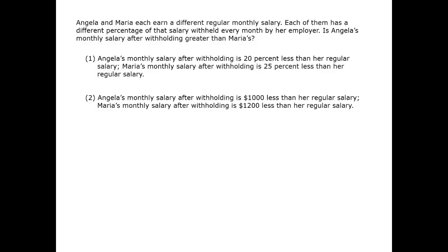In this question, it's maybe not totally obvious what the data statements are going to be giving us, but we know that we have a salary, a withholding, and a salary after withholding — which we can think of as an effective salary. Therefore we can write E, the effective one, equals S minus W.